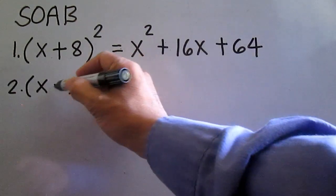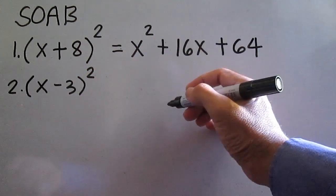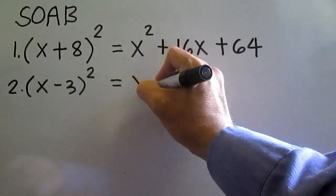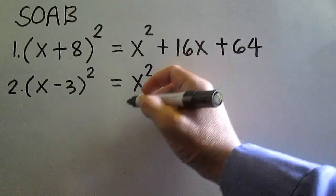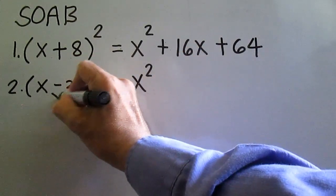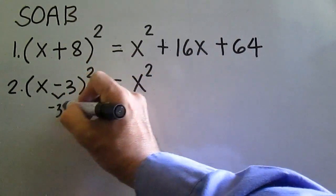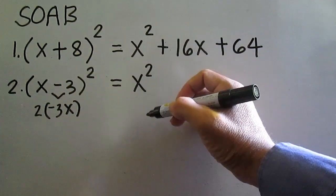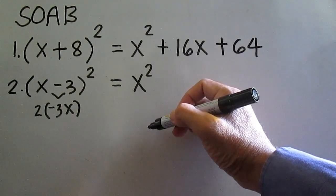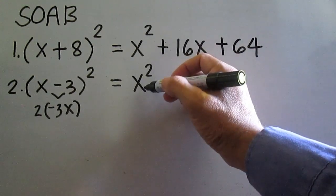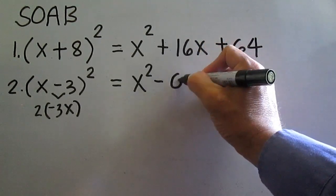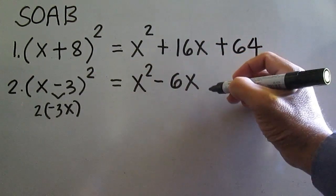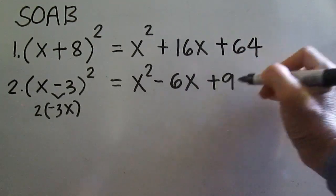Number 2, the square of x minus 3. This is equal to the square of the first term: x times x is x squared. Twice the product of the first and second term: x times negative 3 is negative 3x, times 2 is negative 6x, so write minus 6x. Negative 3 times negative 3 is 9, so plus 9.